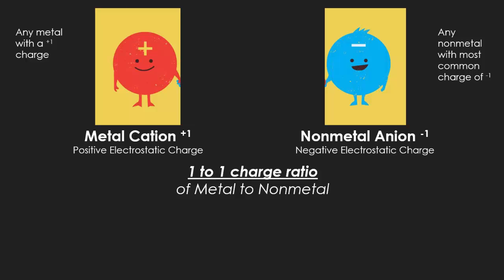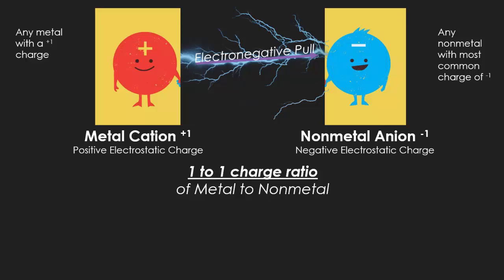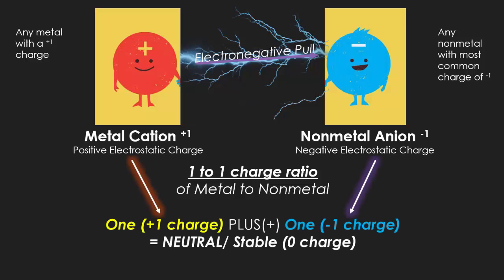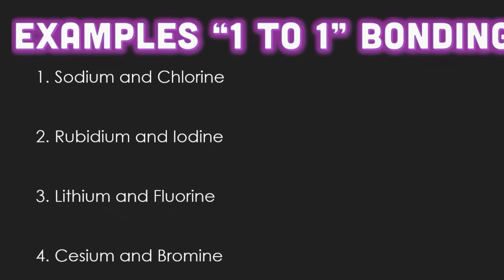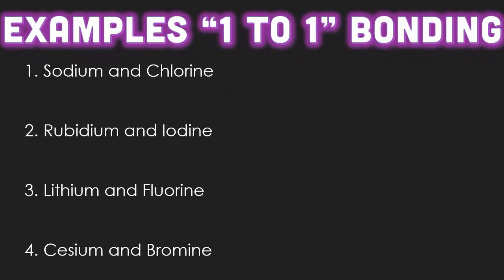So how does this bonding occur? The electronegative pull from the nonmetal — because nonmetals have very high electronegativity, or willingness to gain electrons — will pull the cation towards itself. Since we have a positive one charge adding to a negative one charge, together they would be stable because positive one plus negative one is zero. Here are some basic examples of one-to-one elemental bonding.